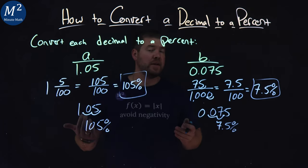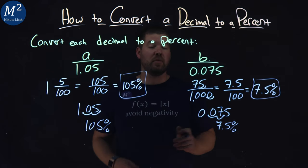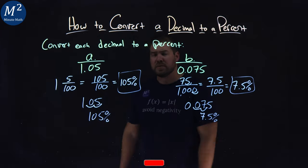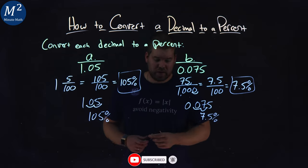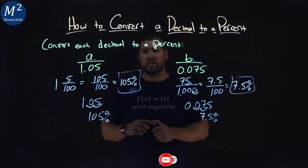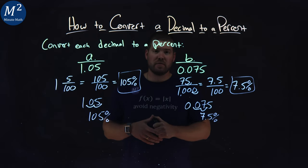Either way, you'll get your answer. Our first one was 105 percent. The second one was 7.5 percent. Hope you learned something here on how to convert a decimal to a percent. If you did, make sure you like this video and subscribe to our YouTube channel. This helps us make more of these free math lessons for you and for everyone else. So as always, thanks for watching.